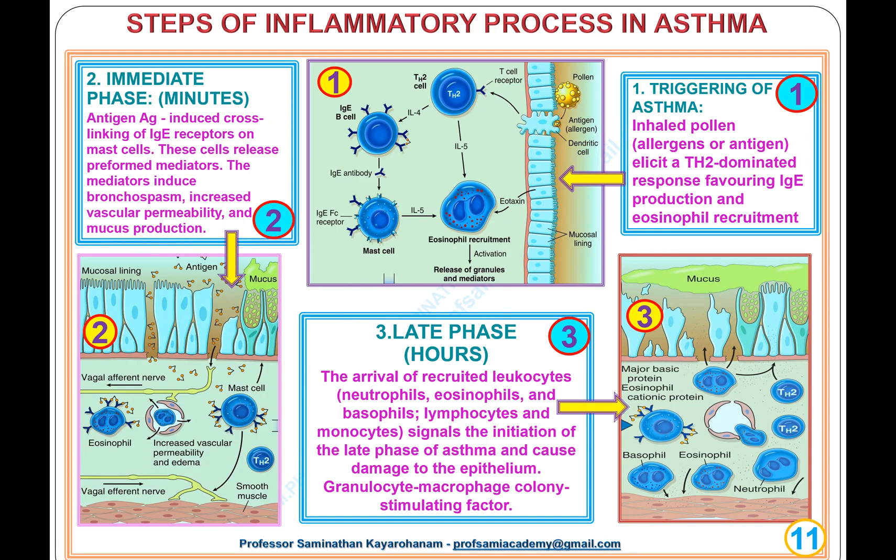Steps of the inflammatory process in asthma: 1. Triggering — Inhaled pollen, allergens, or antigens elicit a Th2-dominated response favouring IgE production and eosinophil recruitment. 2. Immediate phase (usually within minutes) — Cells release preformed mediators that induce bronchospasm, increased vascular permeability, and mucus production. 3. Late phase (usually within hours) — Arrival of recruited leukocytes (neutrophils, eosinophils, basophils, lymphocytes, and monocytes) signals initiation of the late phase, causing epithelial damage and granulocyte-macrophage colony-stimulating factor activity.